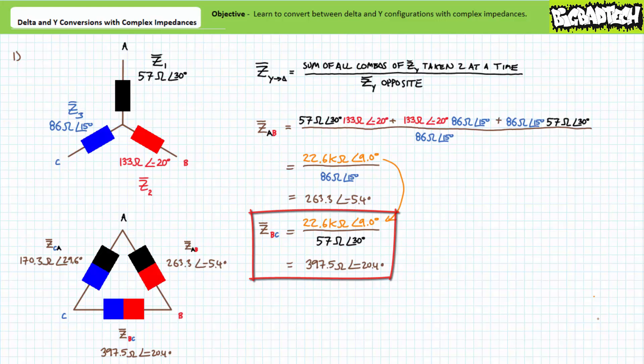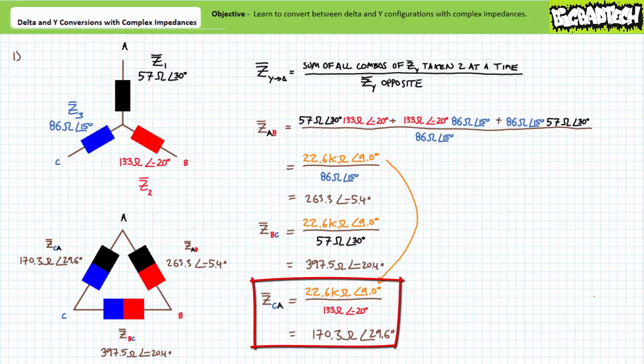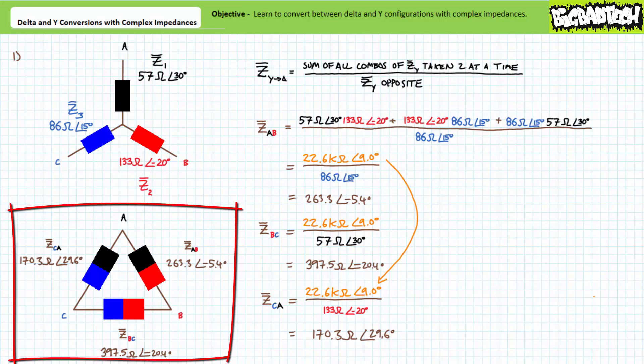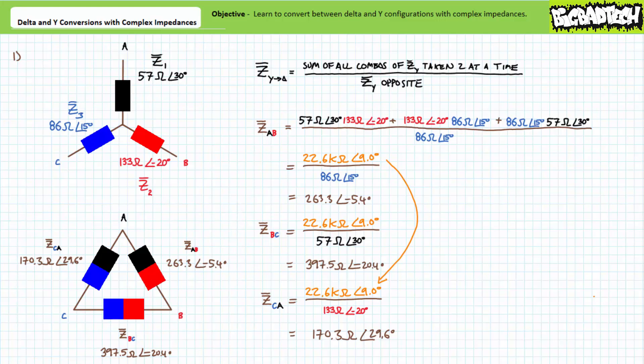Finally, to solve for Z-C-A, take the previously calculated numerator and divide it by the opposite Y impedance Z2. The formula suggests Z-C-A is 170.3 ohms at 29.6 degrees. Our equivalent delta configuration features Z-A-B at 263.3 ohms and negative 5.4 degrees, Z-B-C at 397.5 ohms and negative 20.4 degrees, and Z-C-A at 170.3 ohms and 29.6 degrees between their respective nodes. Any circuit or sources attached to these three nodes would be none the wiser to the substitution.